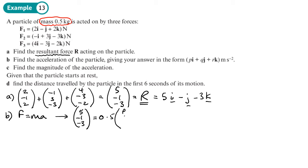If I times both sides by 2, I'll get (10, -2, -6) equals (p, q, r). So then I can write down my final answer as 10i minus 2j minus 6k, and that's the acceleration in meters per second squared.